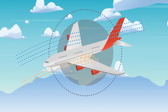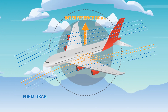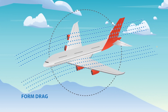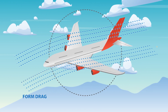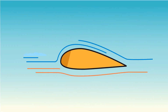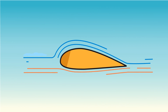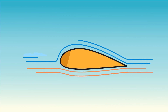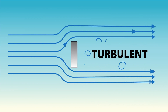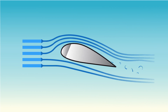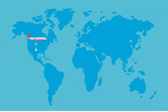Parasite drag consists of form drag, interference drag, and skin friction drag. Form drag refers to the resistance of airflow around an aircraft and its components. When air must separate to move around an aircraft, it eventually must rejoin after passing the aircraft and its components. How quickly and smoothly the air rejoins affects how much resistance the air creates. The more turbulent the air is when rejoining, the greater its resistance to the aircraft's movement. The smoother it rejoins, the less resistance is created, and the less form drag fights our airplane as we travel from point A to point B.